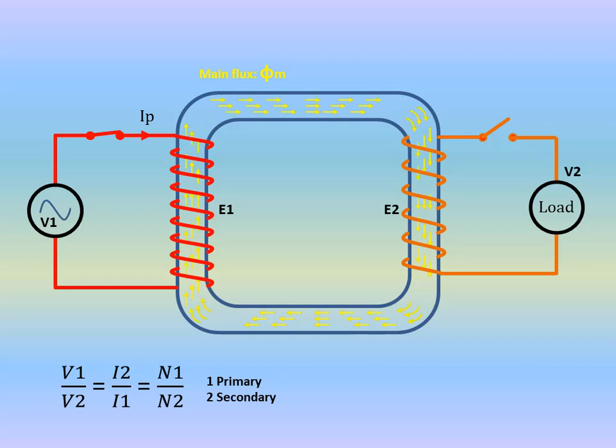Let's consider a scenario where at no load on the secondary side, the main flux is 50 weber. When a load is connected to the secondary side, current begins to flow through the secondary winding generating a magnetic flux in the core known as the secondary flux. Suppose this secondary flux is 25 weber under a certain load. According to Lenz's law, this secondary flux interacts with the primary flux and opposes it. As a result, the main flux weakens due to the opposing secondary flux.